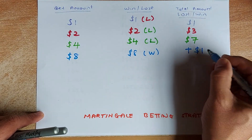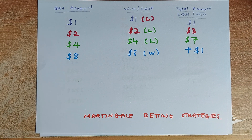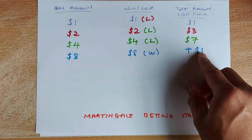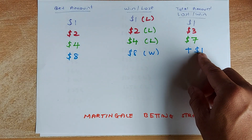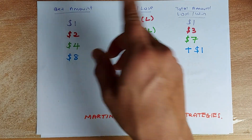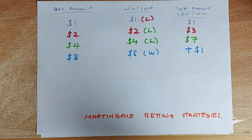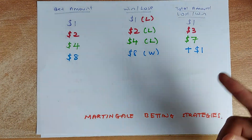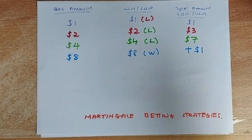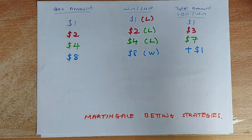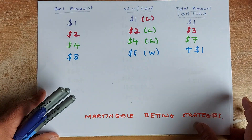You keep on repeating this strategy, and every time you win you get one dollar. You start again from one dollar and keep on betting until you win. Each time you win you collect one dollar. If you play a hundred times and win a hundred times, you win a hundred dollars — that's the strategy.